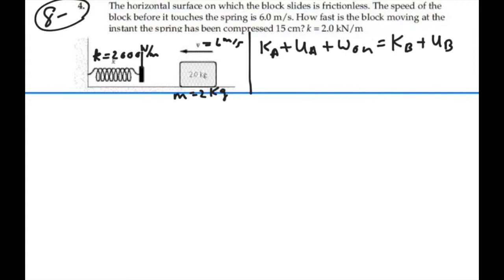In this case, our point A is going to be the point at which the block contacts the spring. And then our point B will be the point at which the spring gets compressed a certain distance X where we've determined that X is equal to 15 centimeters, 0.15 meters. Alright, so what do we know?